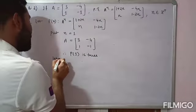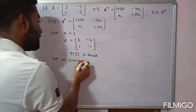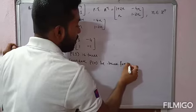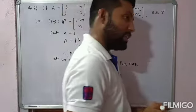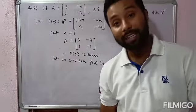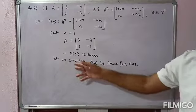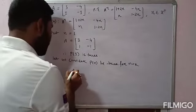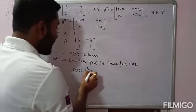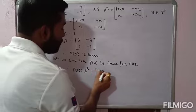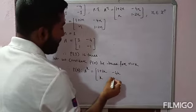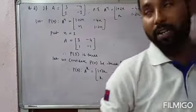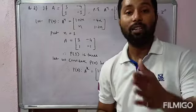Step 3: let us consider P(n) be true for n equal to k. Therefore we can write P(k): A to the power k equals [1+2k, −4k; k, 1−2k]. Call this equation number 1. Wherever n appears, replace it by k on both left-hand side and right-hand side.